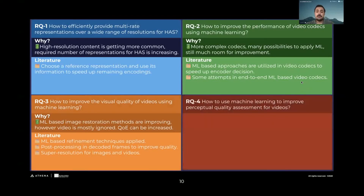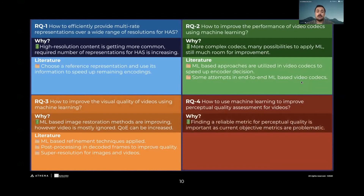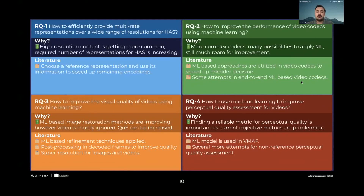Finally, how can we use machine learning to better assess perceptual quality? The objective metrics we use are not well correlated to the human perception system, making this an important task. VMAF, which was recently proposed using machine learning, quickly became an industry standard, and there is still room for improvement.